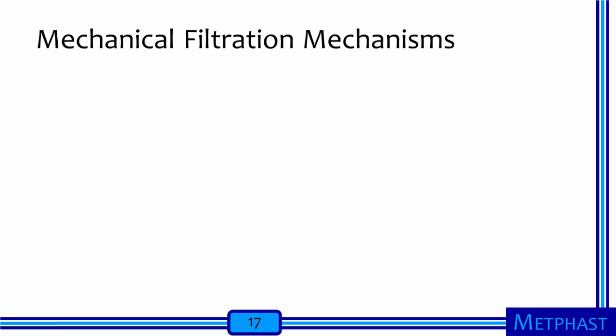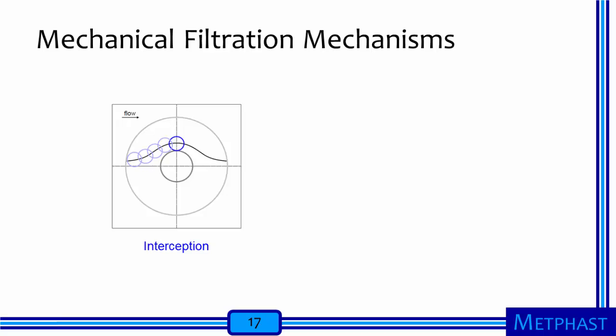How do fibrous filters capture particles? The first mechanical filtration mechanism is interception — the capture of particles that follow air streamlines. A spherical particle follows the air streamline moving around the fiber. If the particle is large enough, it will touch the fiber and be collected by interception. Particles bigger than a certain size cannot pass by a fiber because they come in contact with it, even if they are following the air streamlines.